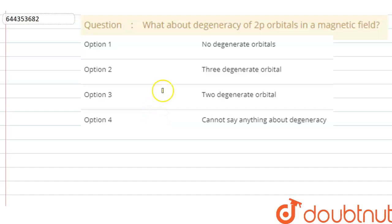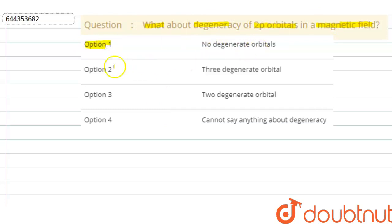Hello everyone, let us solve this question. The question says: what about the degeneracy of 2p orbitals in a magnetic field? Option A: no degenerate orbitals. Option 2: 3 degenerate orbitals. Option 3: 2 degenerate orbitals. Option 4: cannot say anything about degeneracy.